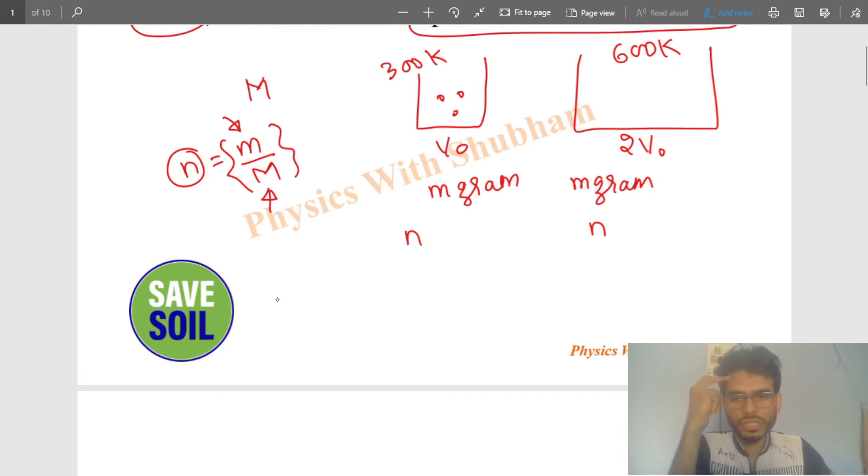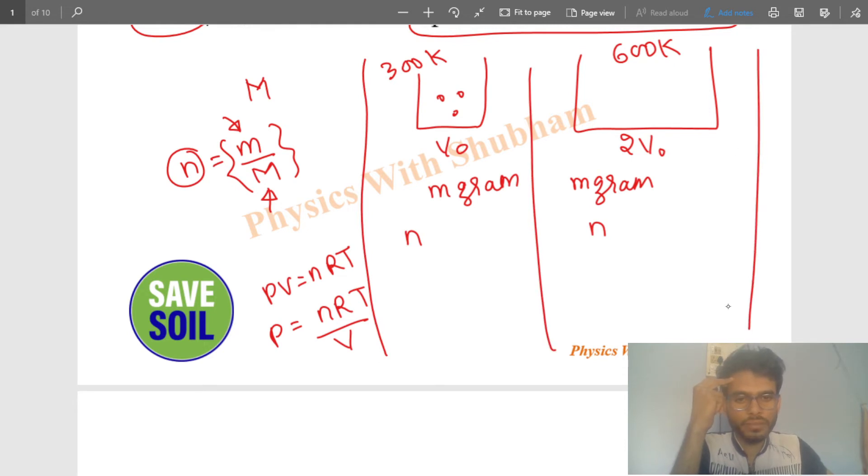For the first vessel, P1 will be nR (which is constant) times temperature, which is 300, divided by volume, which is V naught.